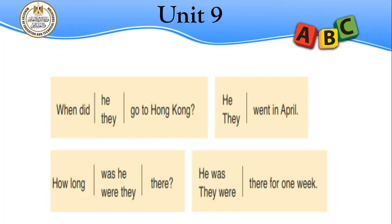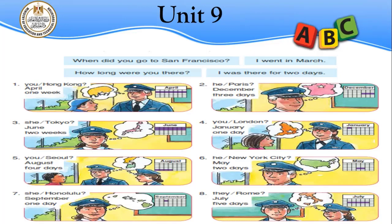How long was he there? He was there for one week. 'For one week' can change depending on the duration — for a month, for a year, for two days, whatever — according to the subject. When did they go to Hong Kong? They went to Hong Kong in April. How long were they there? They were there for one week.